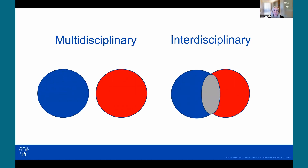Amyloidosis centers of excellence are often described as multidisciplinary, but I also think about interdisciplinary care teams. What exactly is the difference? I actually use these terms interchangeably, but technically they're different. Multidisciplinary refers to different specialties working together to create a comprehensive and integrated plan. I think interdisciplinary actually describes the process best — each subspecialist giving their knowledge and expert opinion to create one integrated plan for the patient.